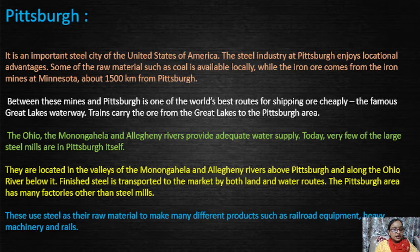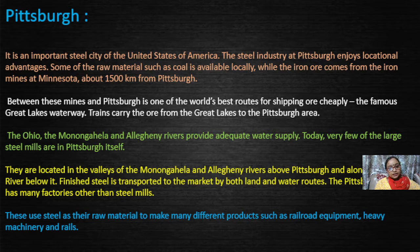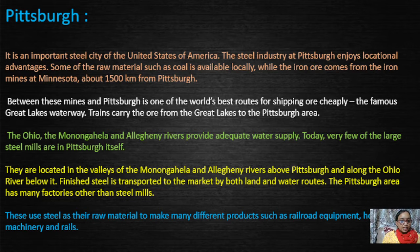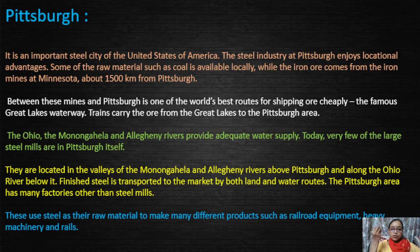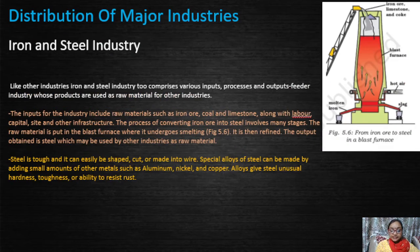Pittsburgh area has many factories other than steel mills. These factories use steel as their raw material to make different products such as railroad equipment, heavy machinery, and rails. All these major industries are indirectly and directly dependent upon the iron and steel industry. By this topic, we have completed the iron and steel industry in detail. In the next class, we will discuss the cotton textile industry.